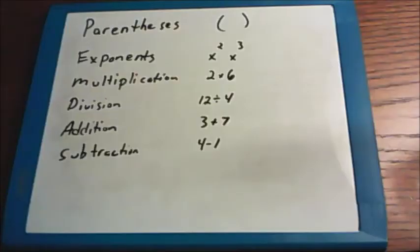Here is the list of things we will look for and the order in which we will look for them. The first is parentheses, and then exponents, multiplication and division, and then finally addition and subtraction.